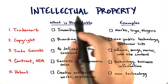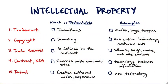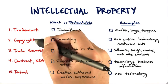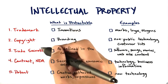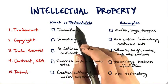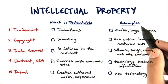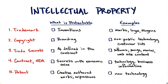Let's take a look at the types of intellectual property. What I'd like you to do is help me understand — if we look at the column on the left: trademark, copyright, trade secrets, contracts and NDA, and patent — and match up what's in the protectable column and the example columns to the correct type of intellectual property.